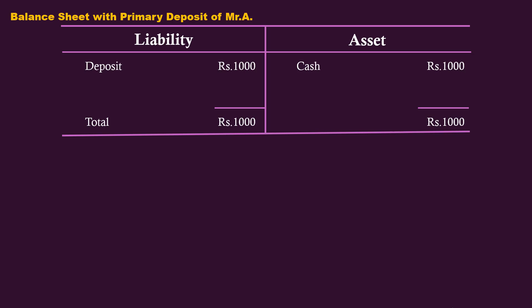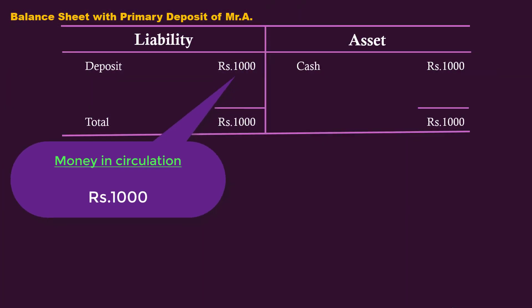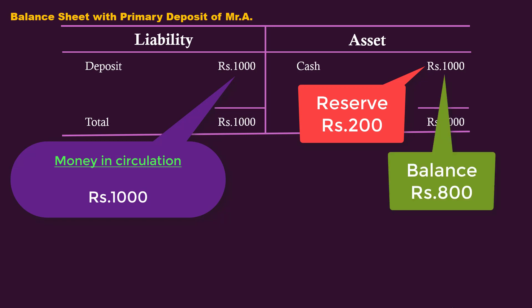Let us concentrate only on the money supply. The money in circulation is 1000 rupees. The bank keeps 20% of the deposit — this is called the legally required reserve — which amounts to 200 rupees. It lends the balance 800 rupees to Mr. B.